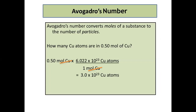Based on Avogadro's number, we can calculate the number of moles or millimoles for a particular substance. For example: how many copper atoms are there in 0.50 mole of copper? We calculate by multiplying 0.50 mole of copper by Avogadro's number divided by one mole of copper. The mole units cancel, and 0.50 × 6.022 × 10²³ gives 3.0 × 10²³ copper atoms. This simple calculation lets you find the total number of elemental atoms in a given mole quantity.